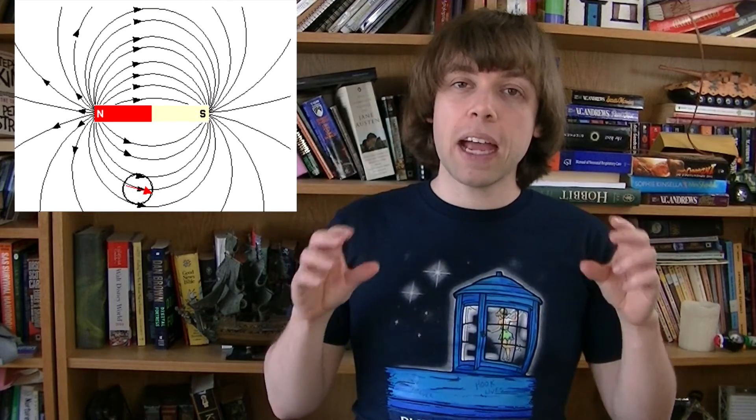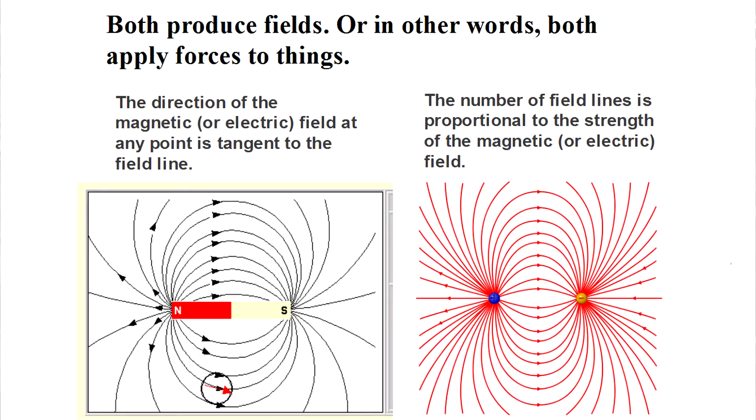So although there are some major differences, there are some clear similarities between the two forces. This can be seen most clearly by comparing the field created by a magnet, and comparing it to the field created by an electric dipole. They turn out to look exactly the same.